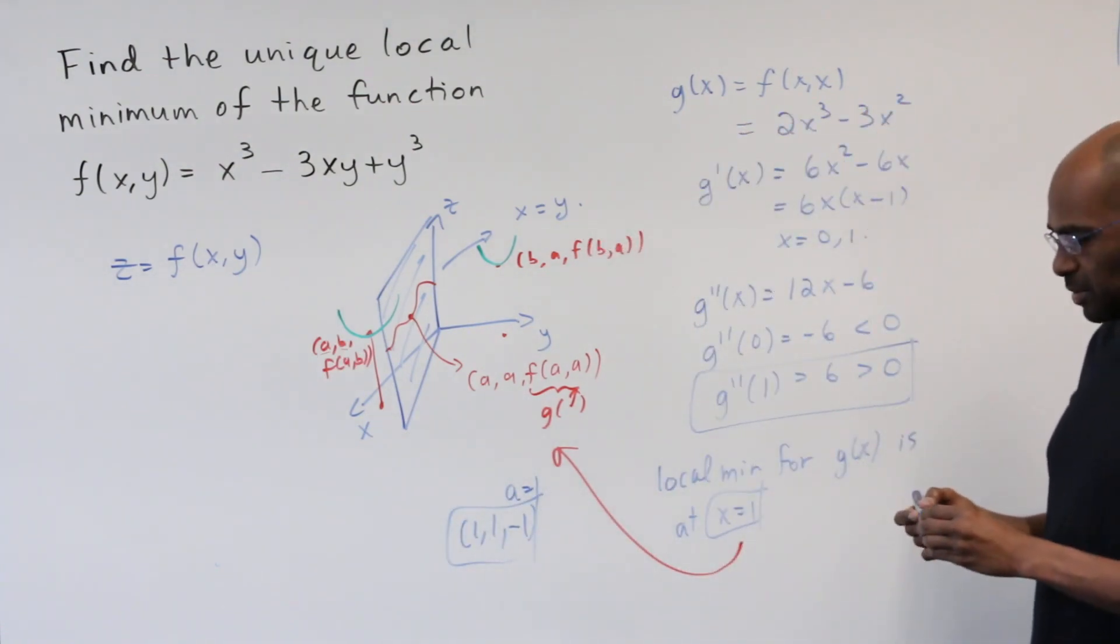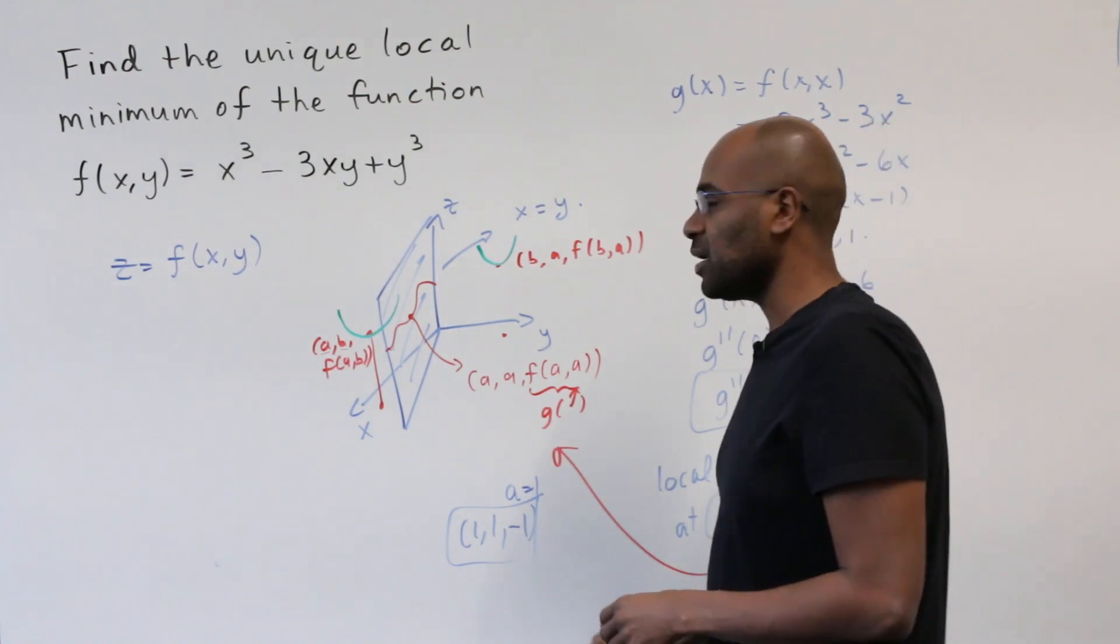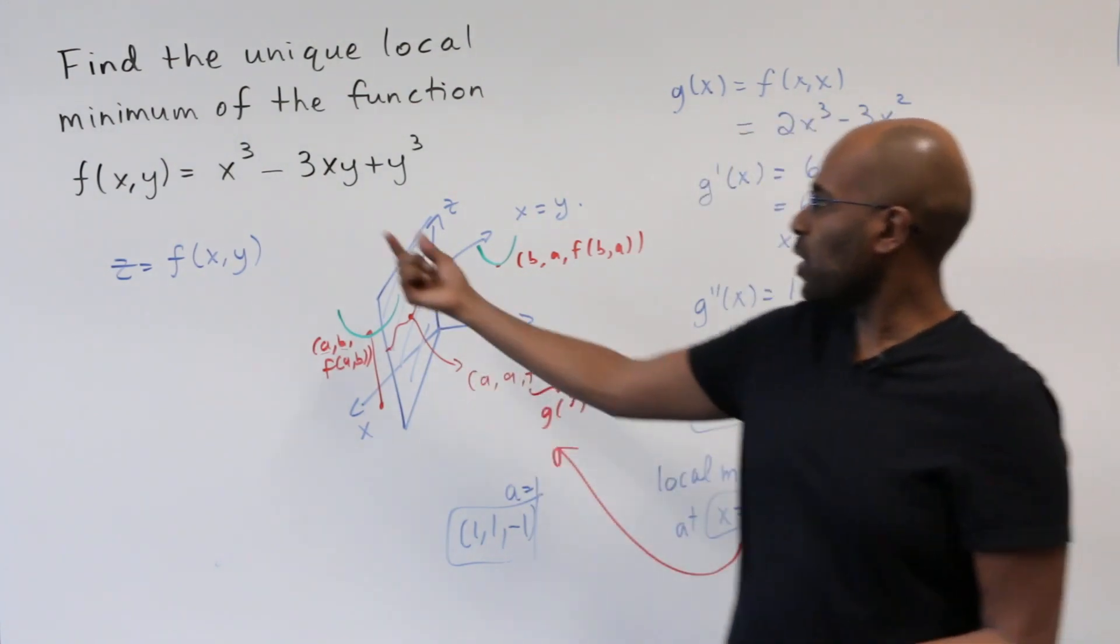So the unique local minimum of this function has value negative 1, and it occurs at the point 1, 1. And we were able to establish this completely without using multivariable calculus.